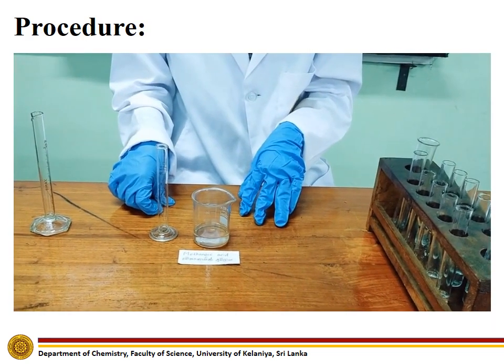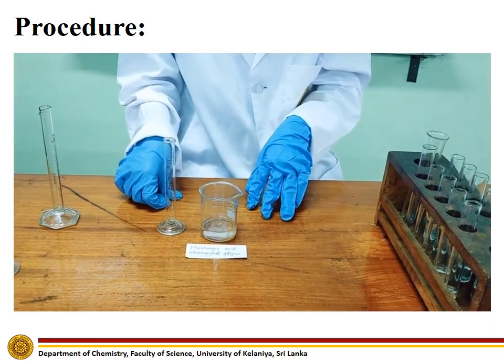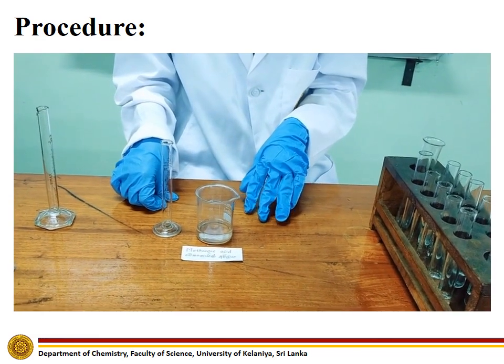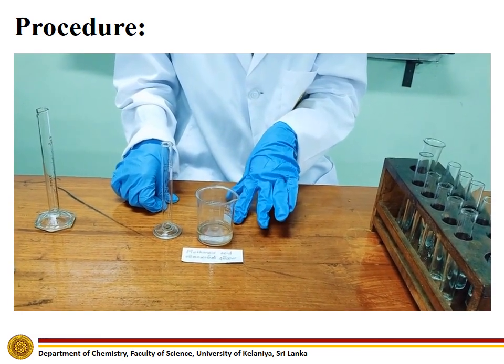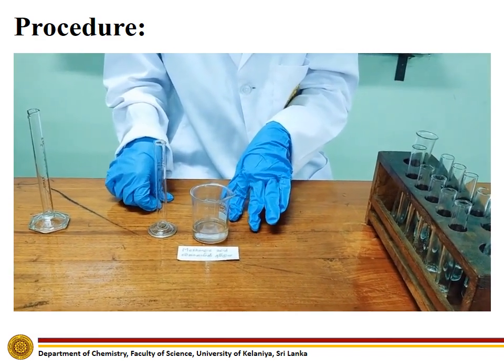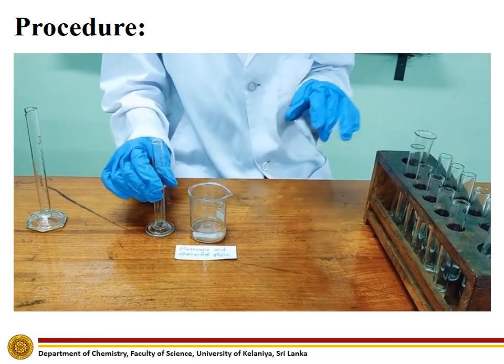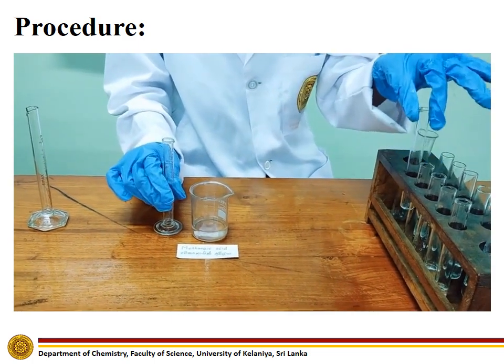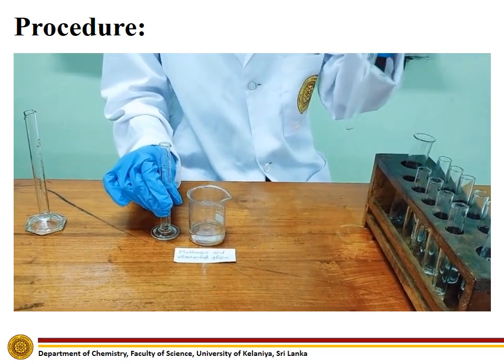Next, we are going to perform all the experiments on methanoic acid. For that, measure about 2 ml of methanoic acid into 6 separate test tubes.